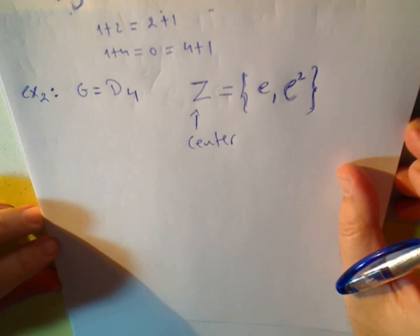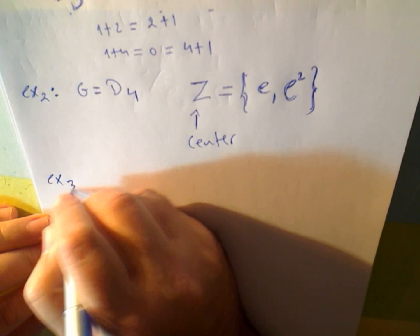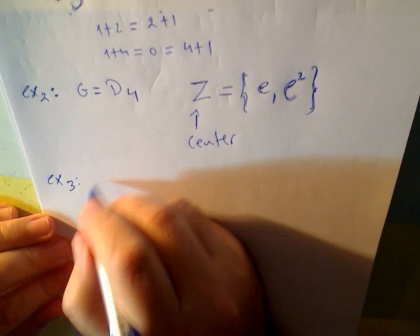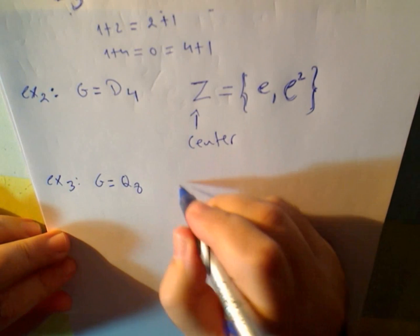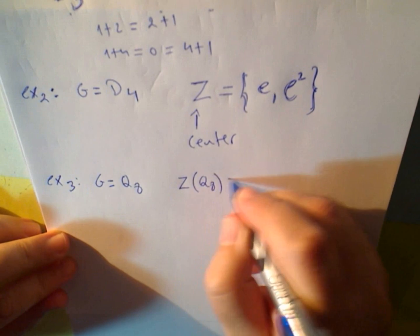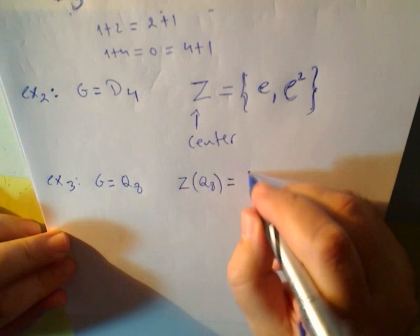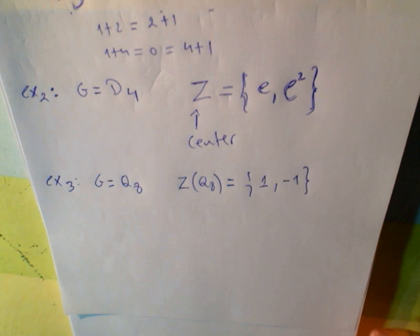Let me give you just one more example, the quaternions. Example 3, quaternions. If G is the quaternions, I'm not going to explain what this is now. The center of the quaternions will be 1 and minus 1. I'll do one video only for that.